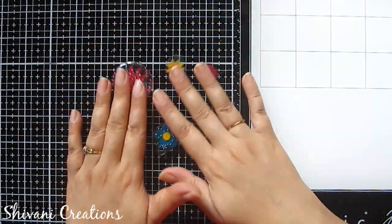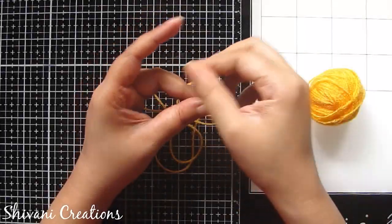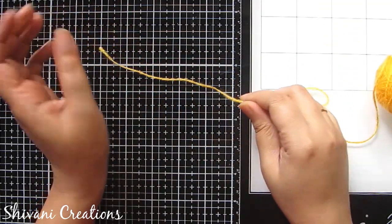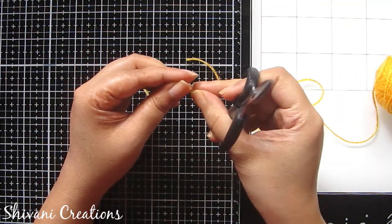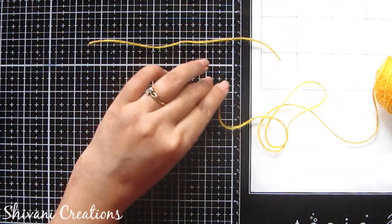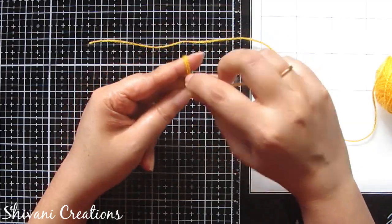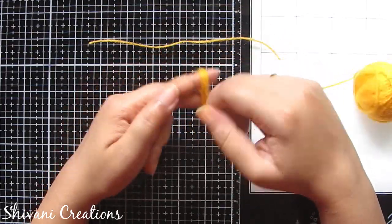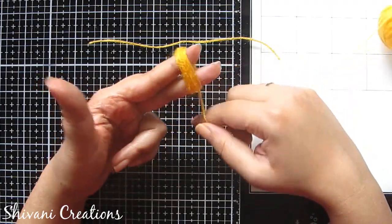Now it's time to make the keychains. So I am starting with making the tassel using wool or yarn. So first take one small piece of yarn and then start rotating or rolling the yarn on your two fingers and I am rotating it for about eighteen to twenty times.